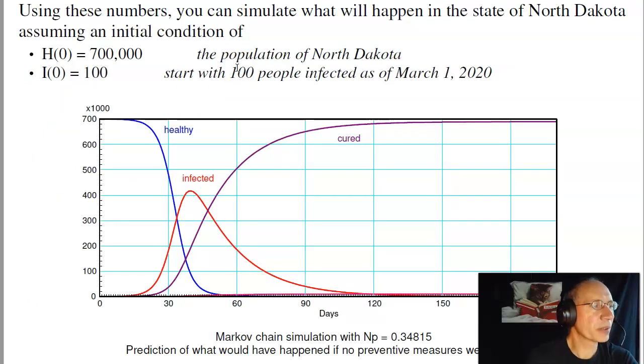Once I have that, I can now run the simulation. Let's give it an initial condition, say 700,000 people that are healthy. That's roughly the population of North Dakota. 100 people are infected as of March 1st. Let the simulation run, and this is what you get. On March 1st, pretty much everyone's healthy.